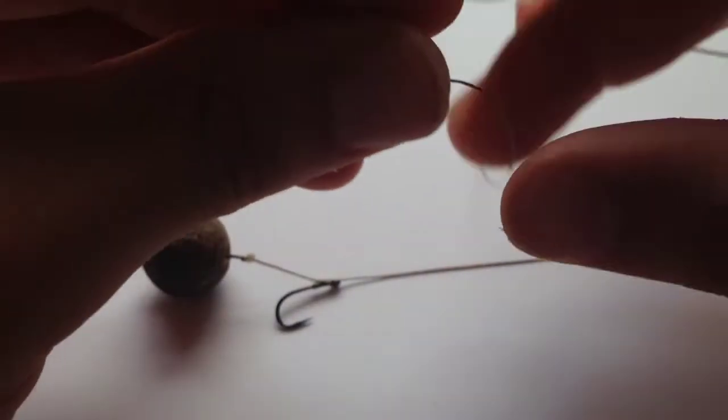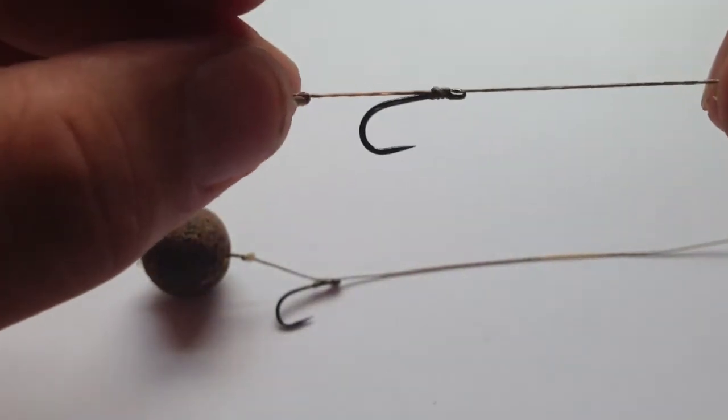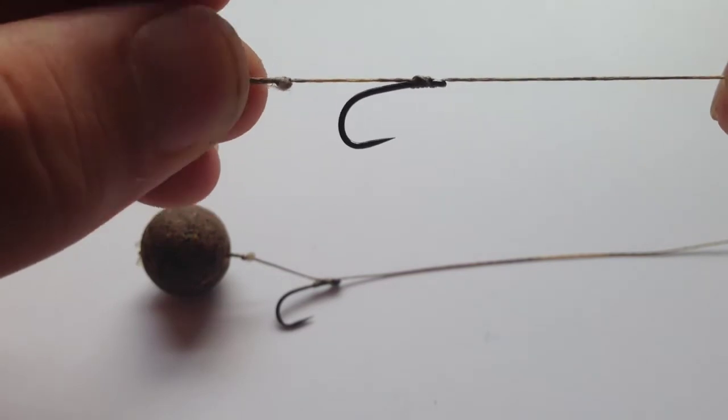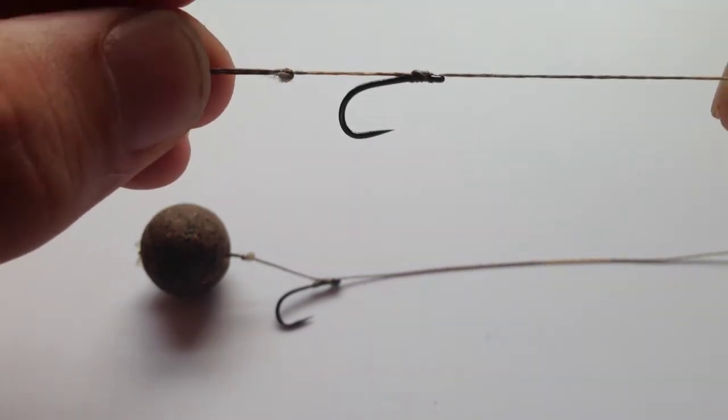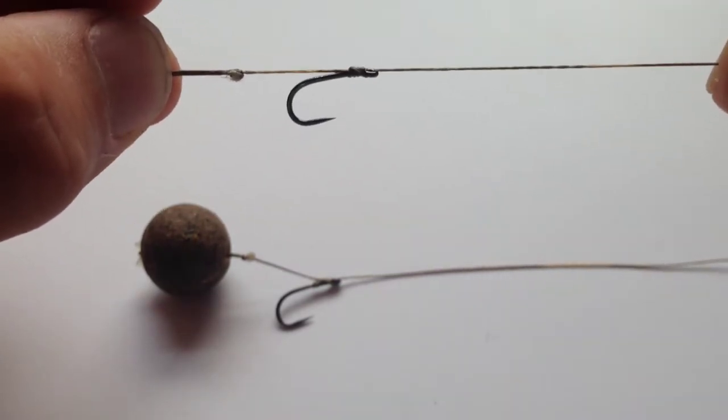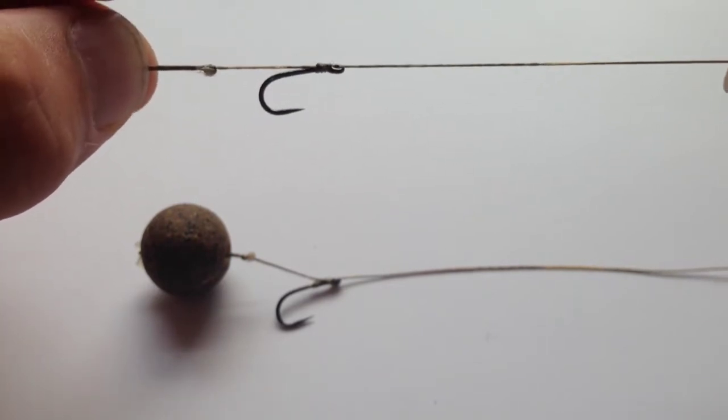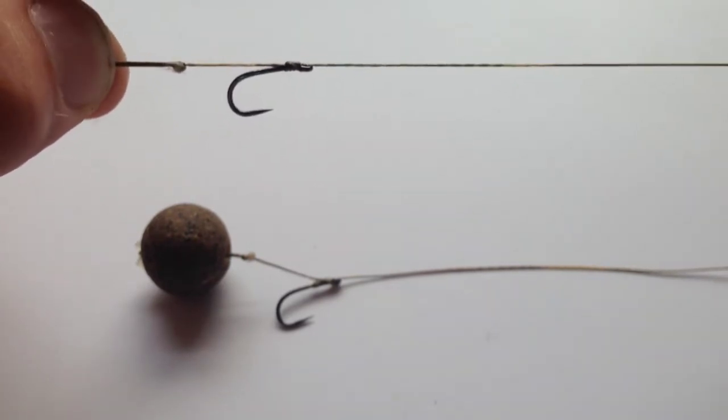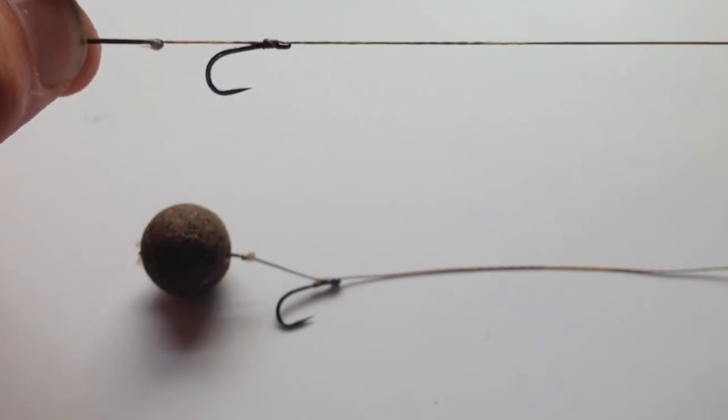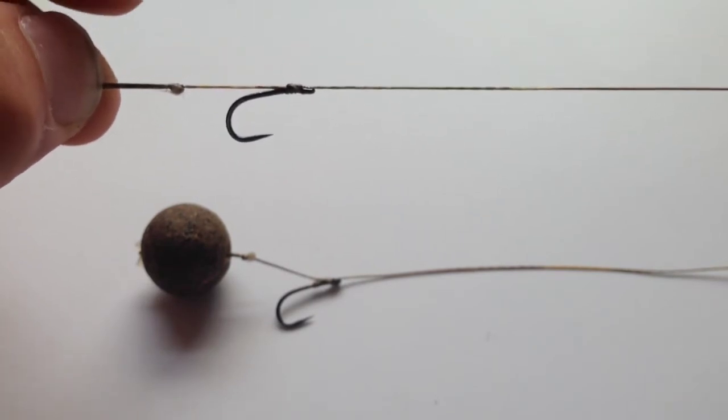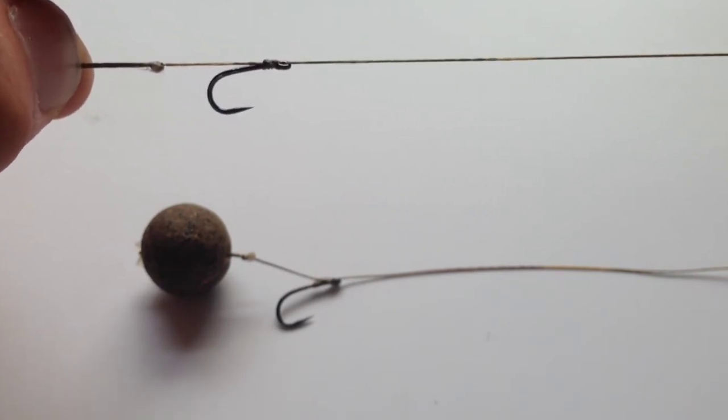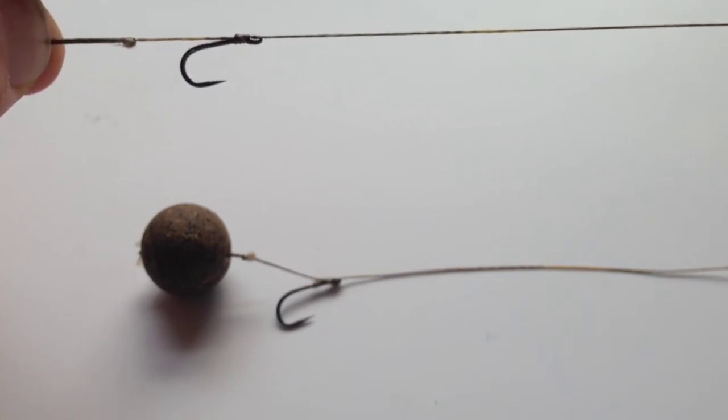This is the standard hair rig. As you can see, the hair is quite flat against the back of the hook. Although it's still an effective and simple rig, the KD rig holds the advantage that the hook will get a much better hold in the fish's lip and a much greater chance of hooking when the fish ejects the bait.